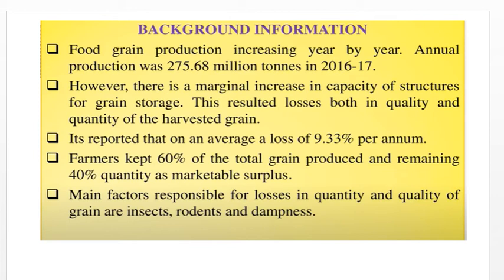It is reported that on average a loss of 9.30% per annum occurs due to lack of proper grain storage. It is generally observed that farmers keep 60% of total grain produced and the remaining 40% quantity is marketable surplus — meaning the portion of a harvest that a farmer can sell on the market to earn profit.